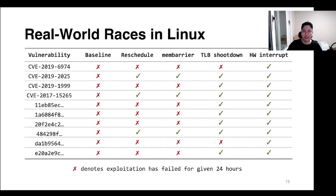Now let's see EXPLaCE working on real-world race condition vulnerabilities. All listed vulnerabilities are multivariable race conditions. We tested 10 vulnerabilities without EXPLaCE and with each of the interrupts. Without EXPLaCE, 24-hour-long exploitation attempts failed for all 10 real-world vulnerabilities, as shown in the baseline column. Using reschedule interrupts, three vulnerabilities were successfully exploited while seven cases failed. With TLB shootdown interrupts, eight cases were exploited, and with hardware interrupts, all 10 cases were successfully exploited.